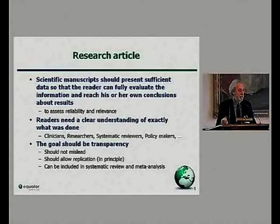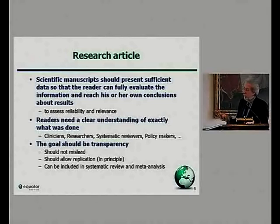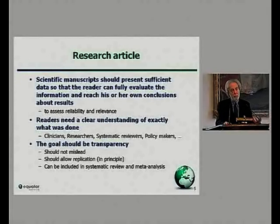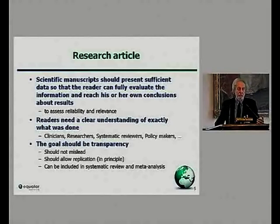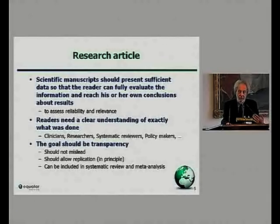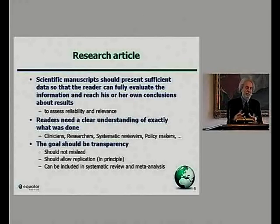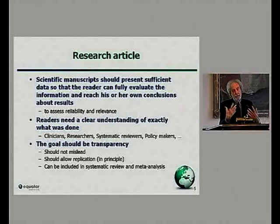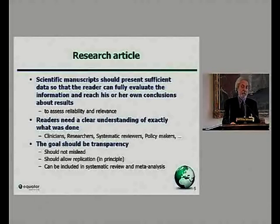The manuscript should present sufficient information for readers to evaluate for themselves and reach their own conclusions about reliability and relevance. They need to know exactly what was done. The goal is transparency — if there's one word which underpins the whole work of EQUATOR, it's transparency. Articles should not mislead; they should be an honest account of what was done and found, allow replication, and give enough methodological detail that systematic reviewers can use those results in a meta-analysis.